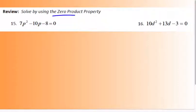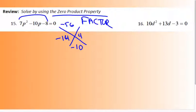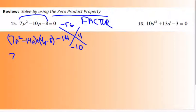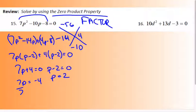Numbers 15 and 16 are solved using the zero product property, which means I need to factor. For number 15, take 7 times 8 to get negative 56. I need two numbers that multiply to negative 56 and subtract to get 10 — that's negative 14 and 4. Rewrite, factor by grouping: (7p + 4)(p − 2) = 0. So p equals 2 or p equals negative 4/7.